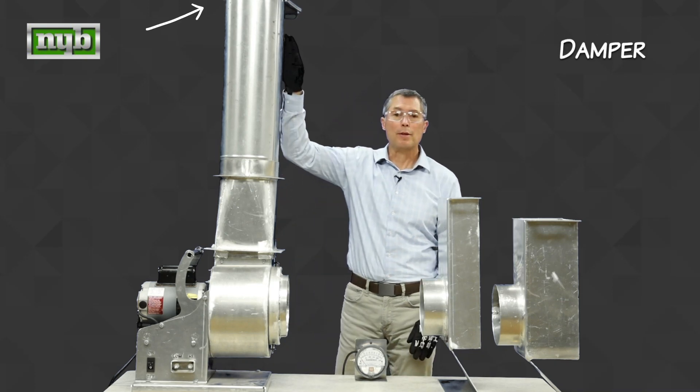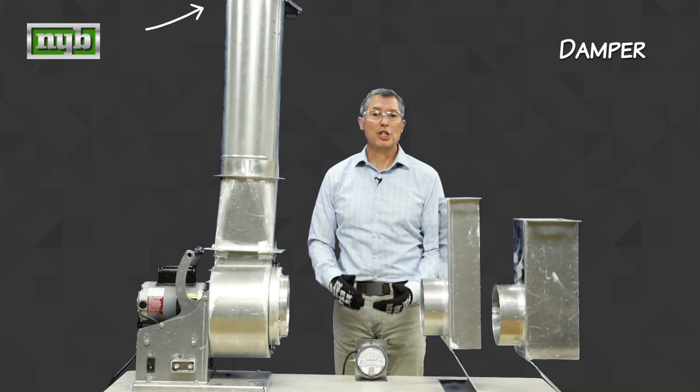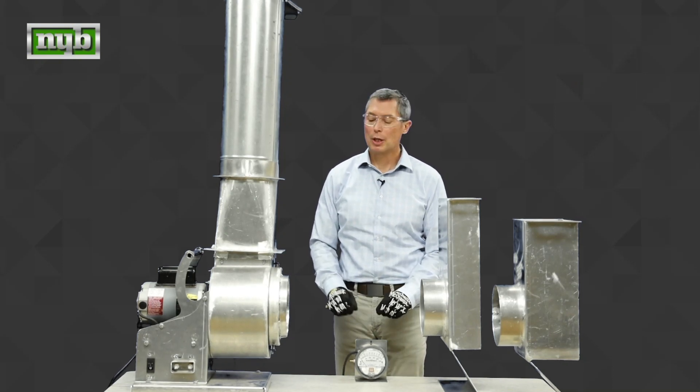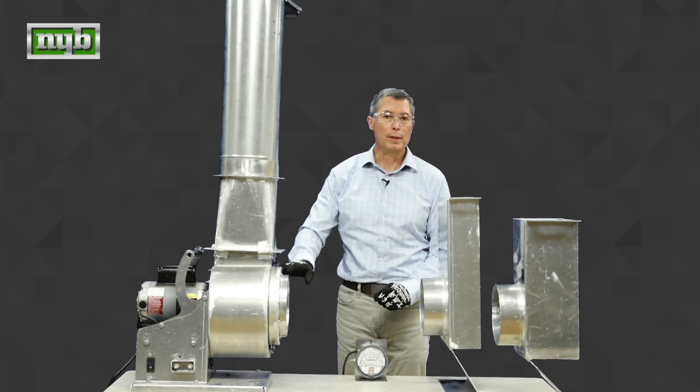We have an outlet damper on the fan. Outlet damper is set to generate about one inch of resistance or 250 Pascal on our gauge. That will be our benchmark setting for the fan with the open inlet.